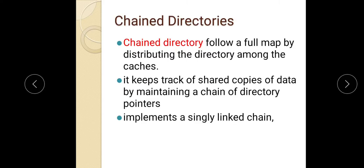Chained directories follow a full map directory structure by distributing the directory among the caches. We will keep a small directory in the memory, and at the same time we will distribute the rest of the directory structure in the caches. We will put a linked list mechanism on the chain — a linked list concept. It keeps track of the shared copies of the data by maintaining the chain of directory pointers. We will implement a singly linked chain.